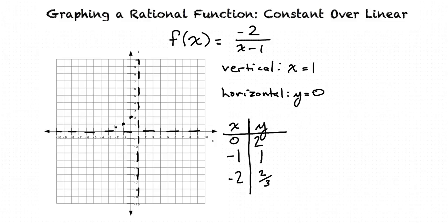Now we'll plot 3 points to the right of our vertical asymptote. When x equals positive 2, we get that y equals negative 2. So, 2 comma negative 2.